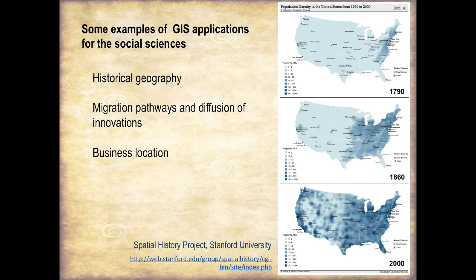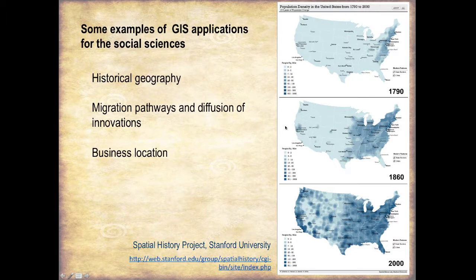For example, here we see a series of maps drawn from a longer time series at 10-year intervals that shows the population distribution over time in the United States. The darker shades of blue represent higher population densities. We can see the pattern of westward migration as well as the influence of the California gold rush in settling the west.